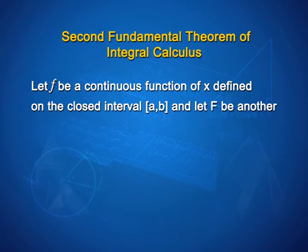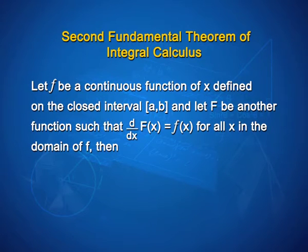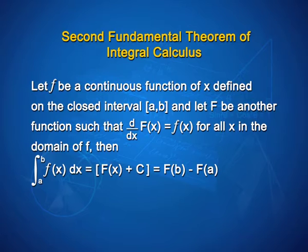The second fundamental theorem of integral calculus says that let f be a continuous function of x defined on the closed interval [a, b], and let F be another function such that d/dx of F(x) is equal to f(x) for all x in the domain of f. Then integral from a to b of f(x) dx is equal to F(x) evaluated from a to b, that is equal to F(b) minus F(a). This is called the definite integral of f over the range [a, b], where a and b are called the limits of integration — a being the lower limit and b the upper limit.